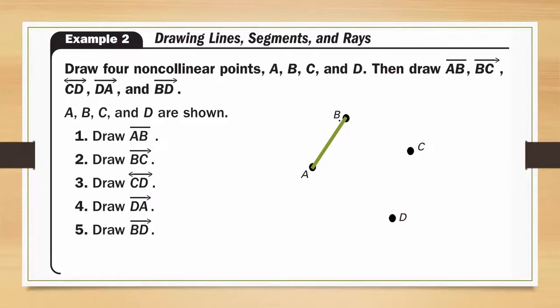Two, draw ray BC. Here's ray BC. Notice over here that my ray starts at point B and goes through point C.